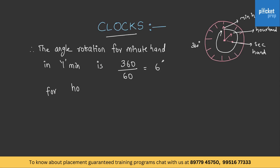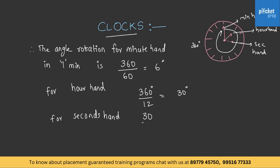For the hour hand, the angle of rotation is 360 degrees divided by 12, that is 30 degrees. For the seconds hand, it is 30 divided by 60, that is half a degree. These are the angles of rotation for the minute hand, hour hand, and seconds hand, and these are to be remembered.